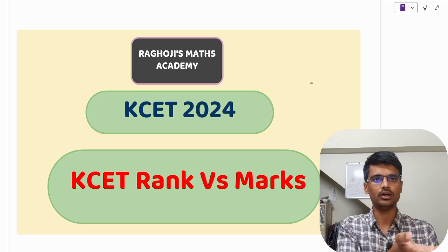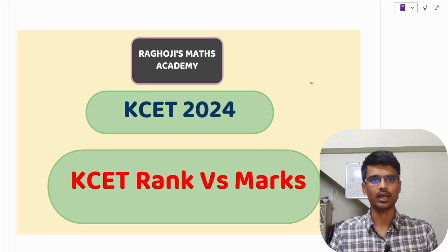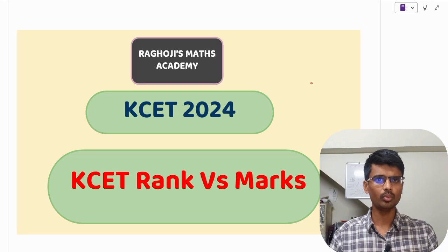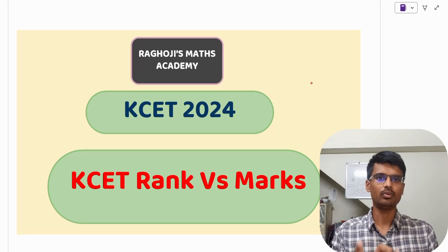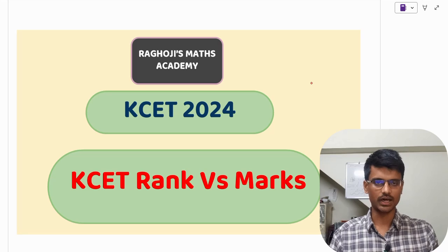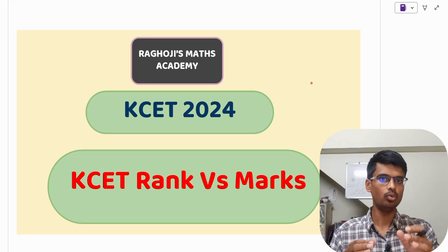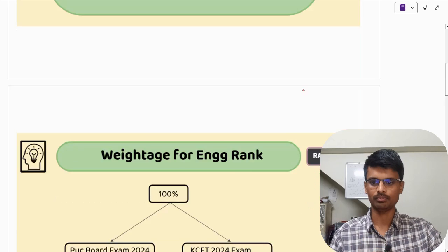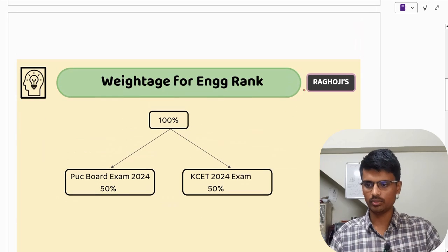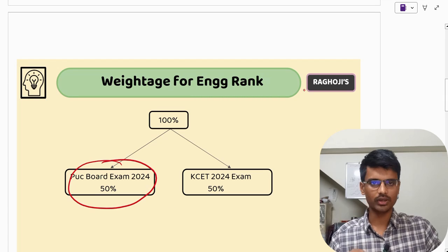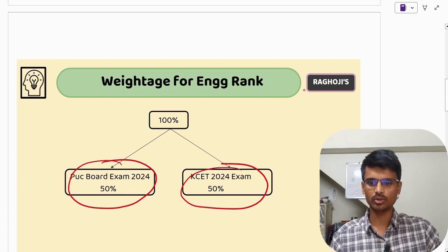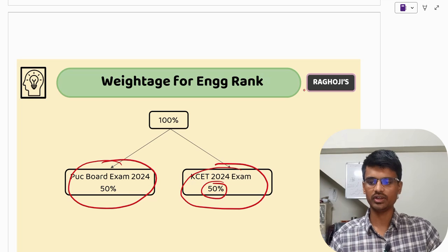Now many students are having doubt how the ranks are calculated, like what is the weightage. Students are asking, sir I have scored 280 marks in my PUC board exam in physics, chemistry and maths, and I have scored 91 in my KCET. So what will be my rank? Students are very much eager to know what rank they are going to get.